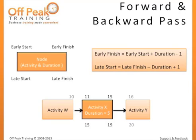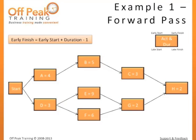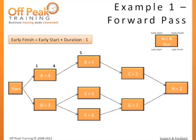Now let's solve an entire network diagram. We will begin with Task A. Since it occurs based on the start of the project, the earliest it can possibly begin is the first day. Using our formula — early start 1, plus duration 4, minus 1 — the early finish equals 4. So A can begin as early as the first day and end at the earliest by the end of the fourth day. Since Task B depends on A, it cannot start until after A's early finish, or the beginning of the fifth day. Using our formula, 5 plus 5 minus 1, the early finish is 9.